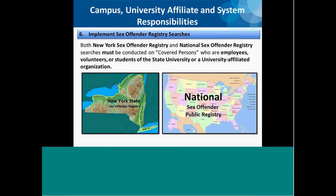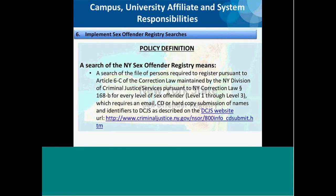The sixth responsibility is that campuses, university affiliates, and system administration must implement sex offender registry searches. Both the New York Sex Offender Registry and the National Sex Offender Registry searches must be conducted on covered persons who are employees, volunteers, or students of the state university or a university-affiliated organization. A search of the New York State Sex Offender Registry means a search of the file of persons required to register pursuant to Article 6C of the Correction Law, maintained by the New York Division of Criminal Justice Services pursuant to New York Correction Law Section 168B, for every level of sex offender — Level 1 through Level 3 — which requires an email, CD, or hard copy submission of names and identifiers to DCJS.